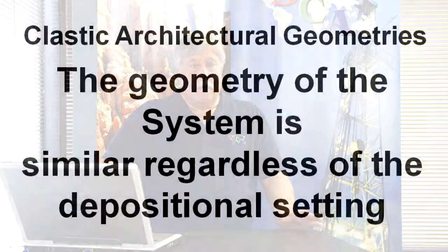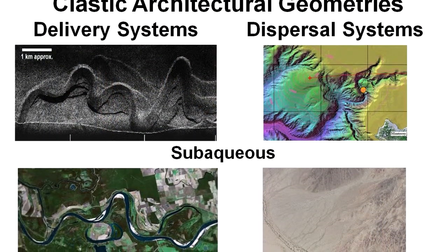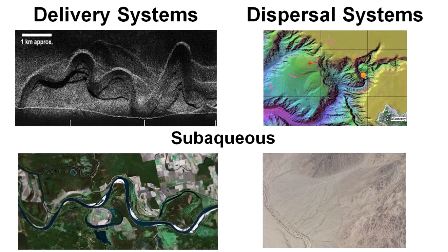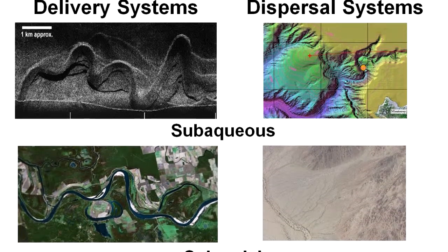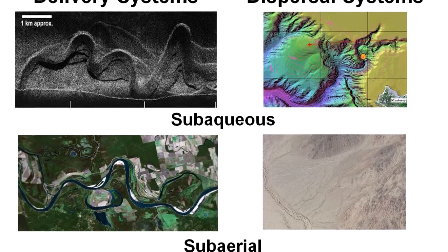The nice thing about this classification is the geometry of these systems is similar, irregardless of the depositional setting. So I can look at delivery systems that are subaqueous and or subaerial, and they will have the same pattern. The same is true with dispersal systems. Alluvial fan systems, which are deposited subaerially, look just like submarine fan systems, which are deposited subaqueously.